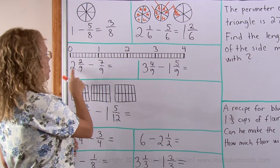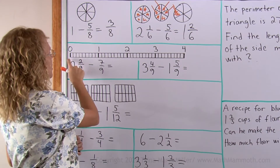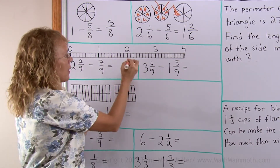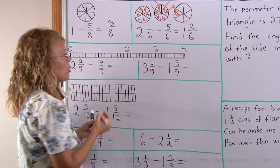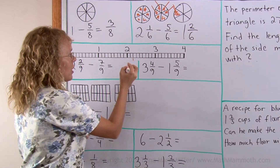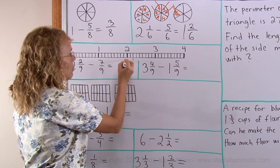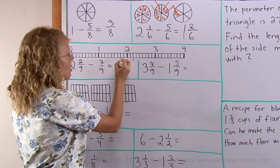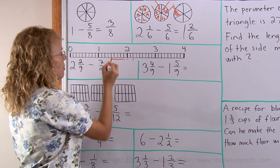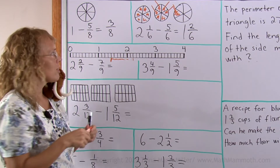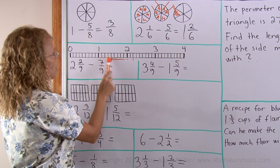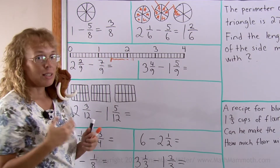Let's say I use 2 and 2 ninths. 2 is here and 2 ninths more, right there at this spot. And then I go backwards 7 ninths: 1, 2, 3, 4, 5, 6 and 7. There. And what is the answer now? Look here — it is 1 and then 1, 2, 3, 4: 1 and 4 ninths.